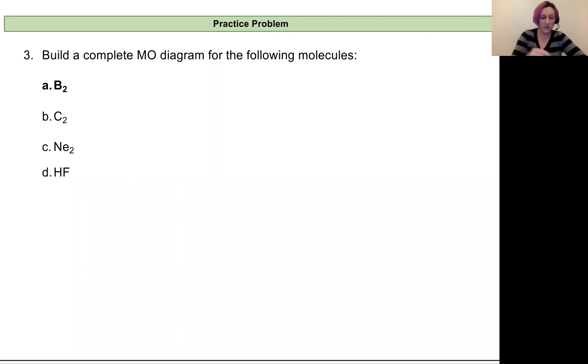So I'm going to start with B2. And so I'm going to build my MO diagram kind of from scratch rather than just memorizing the MO. So I've got my energy scale. And what I'm going to do is first build the atomic orbitals for boron.